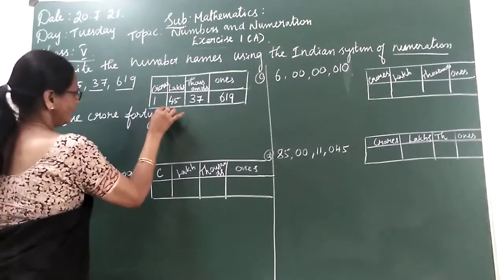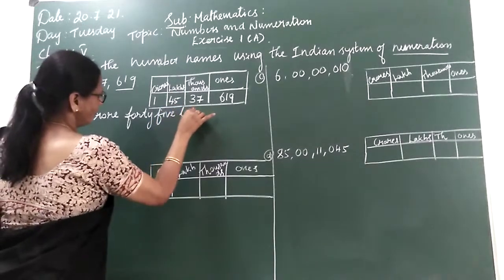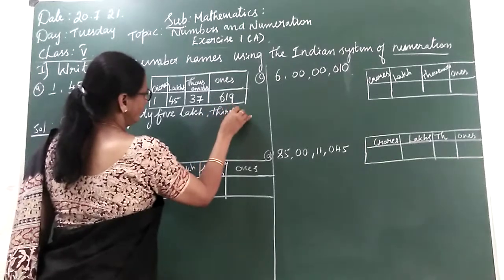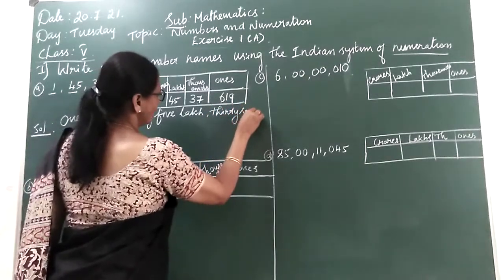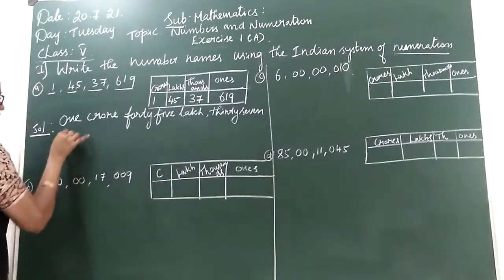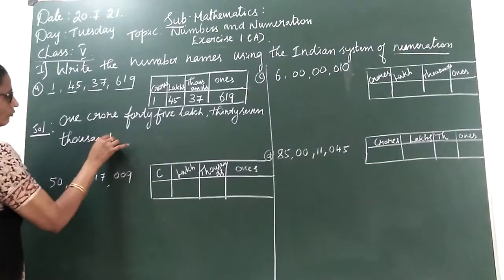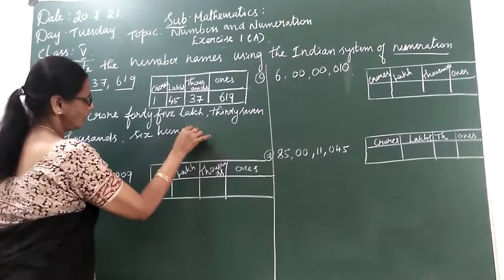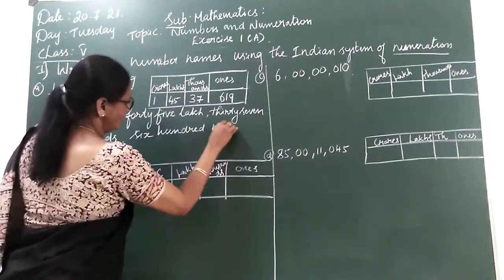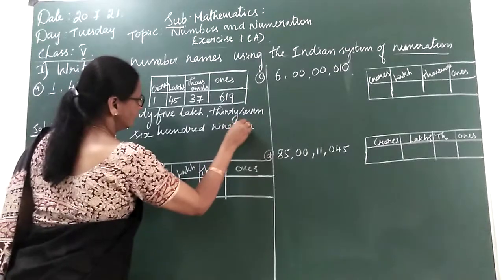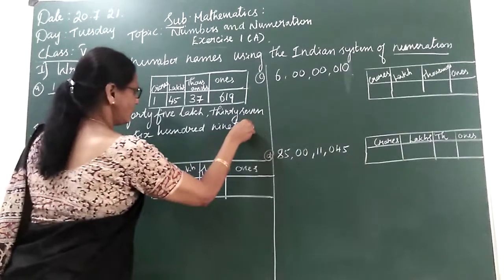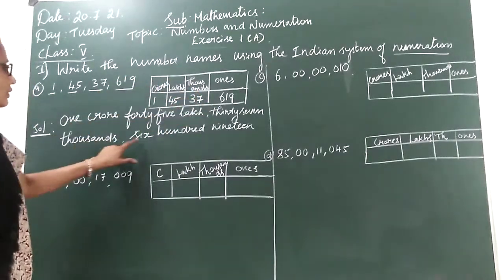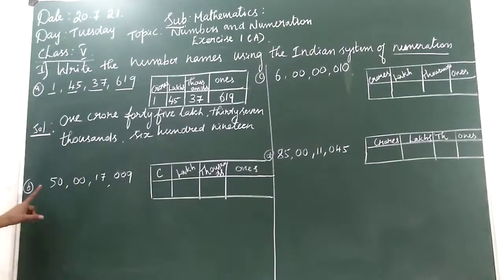F-O-R-T-Y, forty-five lakhs. T-H-I-R-T-Y, thirty-seven thousand, S-I-X, H-U-N-D-R-E-D, six hundred, N-I-N-E-T-E-E-N, nineteen. This way, 1 crore 45 lakh 37,619. These are some children.